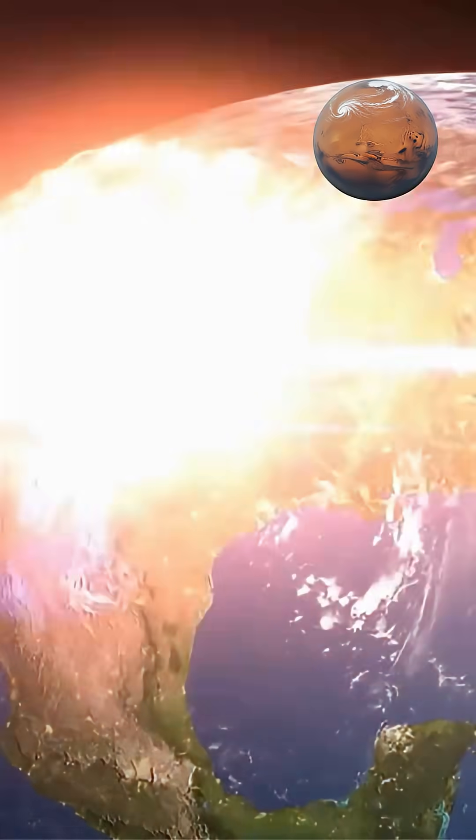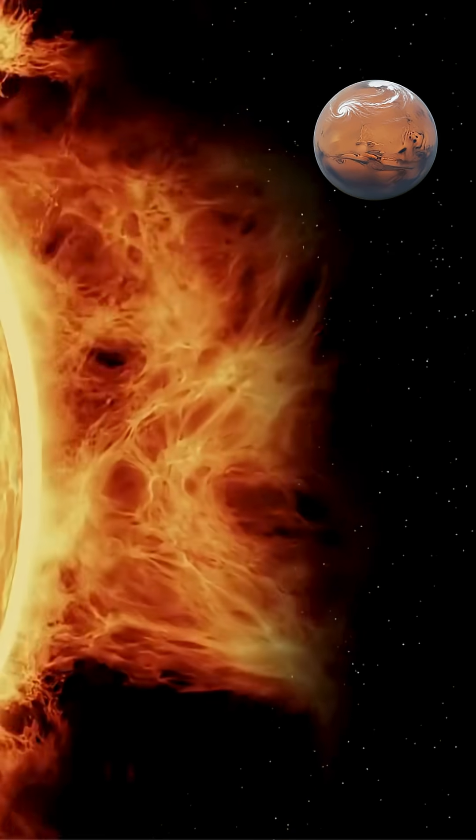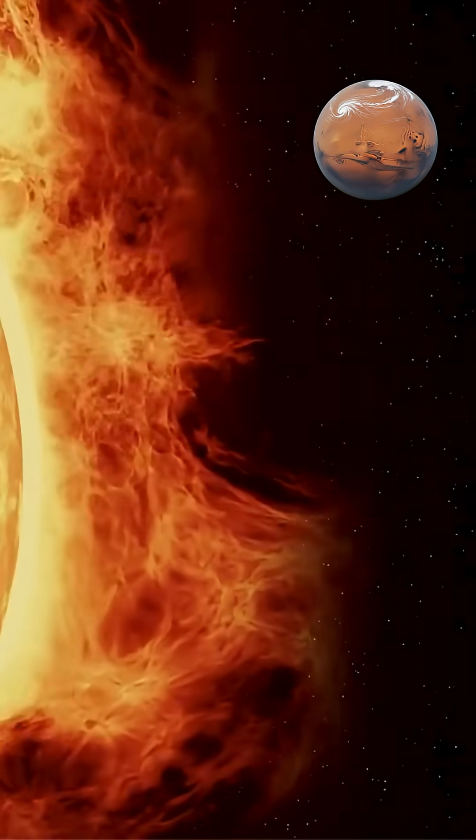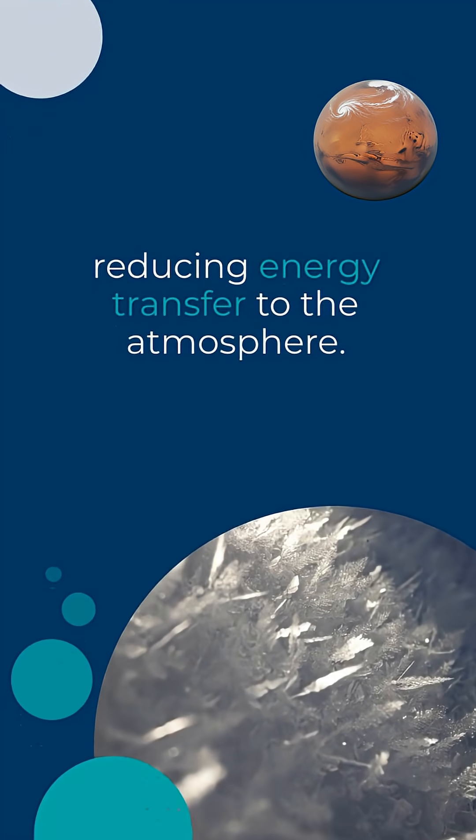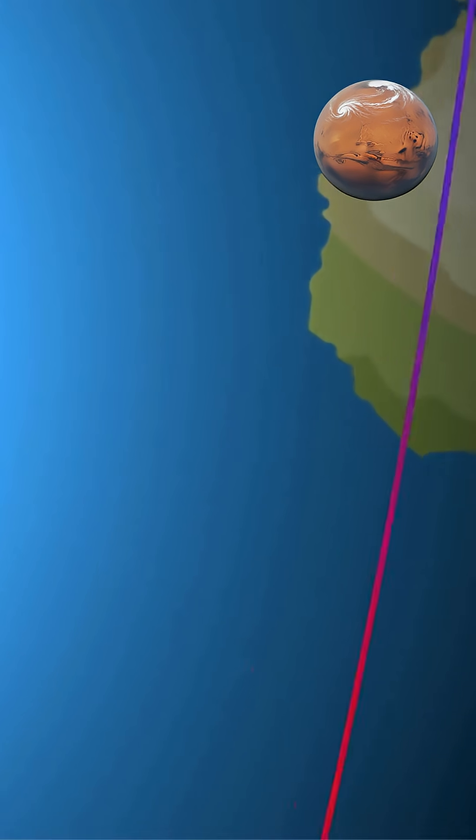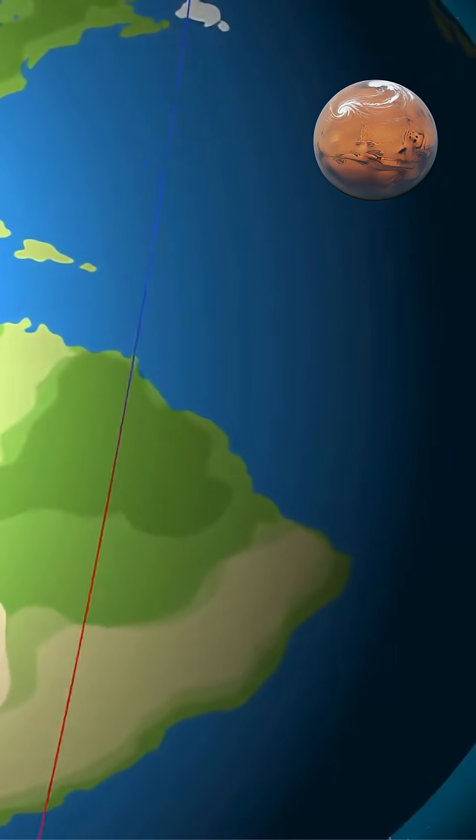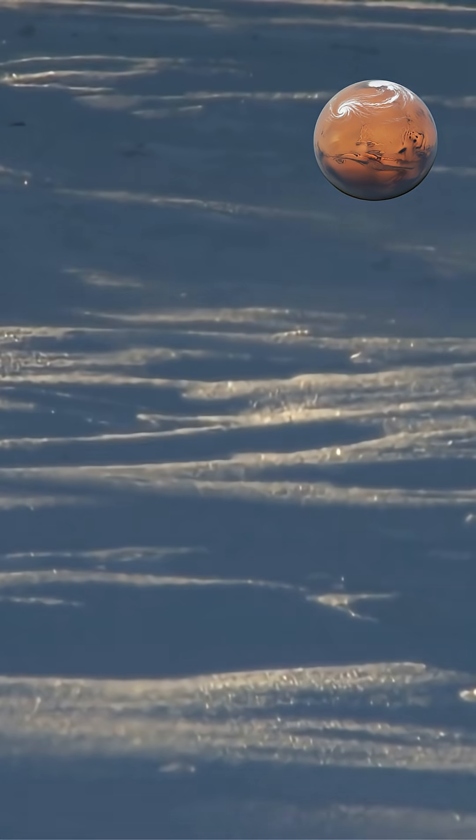Recent research reveals another factor. Uranus's expanding magnetosphere shields the planet from solar wind, reducing energy transfer to the atmosphere. This protective shield makes it more difficult for solar wind to reach the planet, further contributing to its cold temperatures.